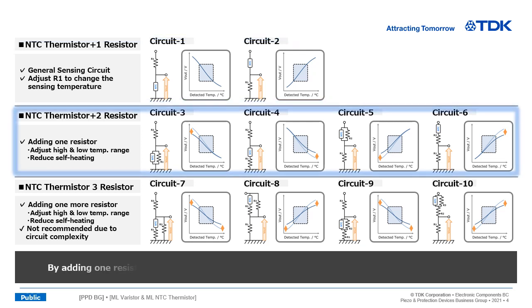By adding one resistor, the output curve in the high and low temperature range can be adjusted. In addition, the self-heating of the NTC thermistor can be suppressed.